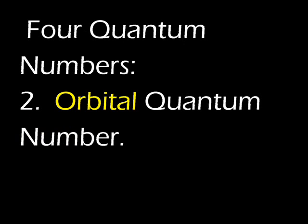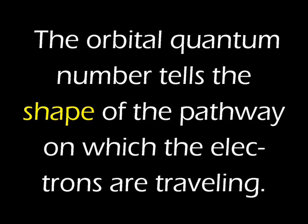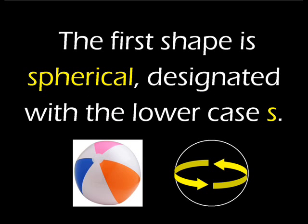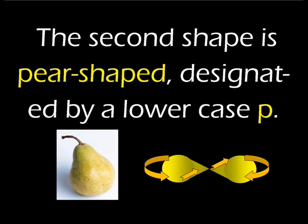The second quantum number is known as the orbital quantum number. It allows us to indicate the shape of the orbit or path that the electrons follow. There are four possible path shapes, but only two are readily described: the spherical and the pear-shaped orbits. We indicate these shapes by using a lowercase 's' to indicate spherical and a lowercase 'p' to indicate pear-shaped.